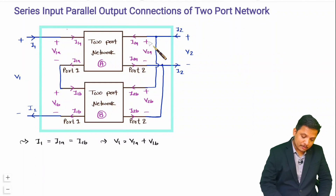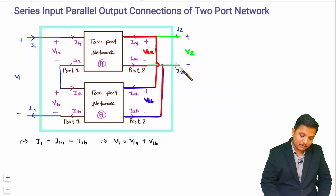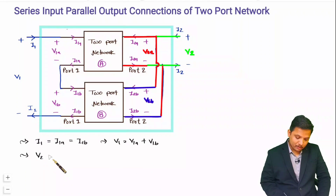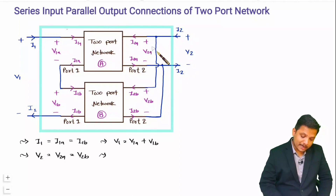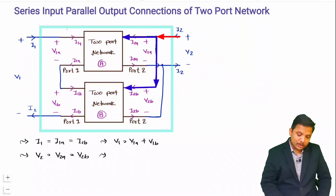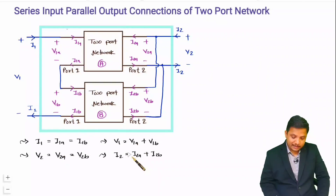Now let us see what is happening at the output side. At the output we have a parallel connection, so voltages are the same: V2 equals V2A and V2 equals V2B. At the output, applying KCL at the node, the current is split — entering currents are I2A and I2B — so I2 equals I2A plus I2B.